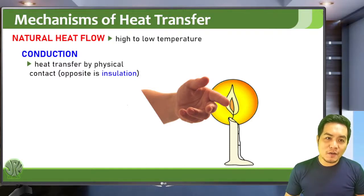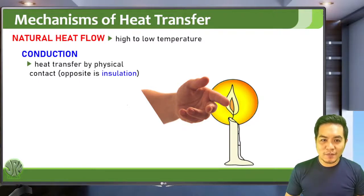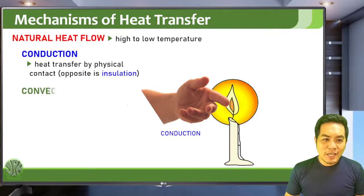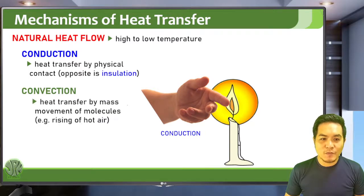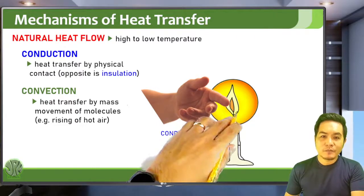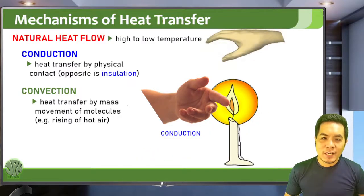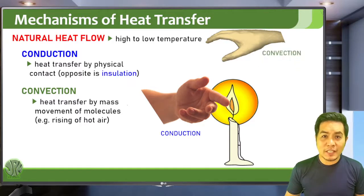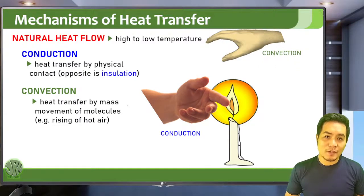The opposite of conduction is insulation. If you don't want heat to be transferred, you use insulation. The second mechanism of heat transfer is convection, which involves mass movement of molecules. An example is the rising of hot air. For a candle, hot air will rise, and if you put your hand above the candle without physical contact, you will still feel the heat through convection due to the rise of hot air.